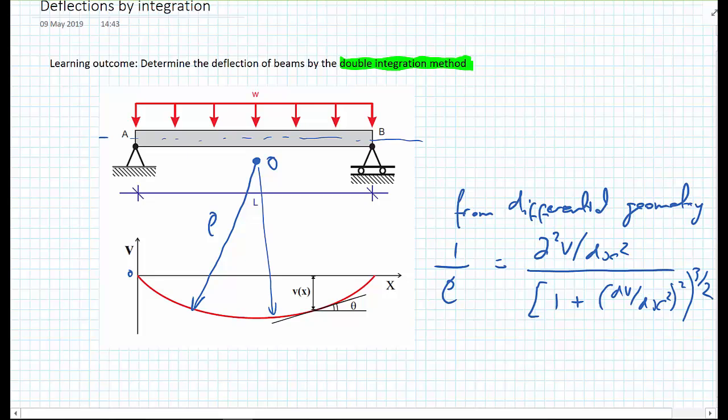So if our deflections V are very small, our rotation theta, which is also equal to the change in deflection with the change in distance going along the beam, so dV/dx. So if V is very small, dV/dx will be very small. And therefore, dV/dx, or d²V/dx², will also be very small.